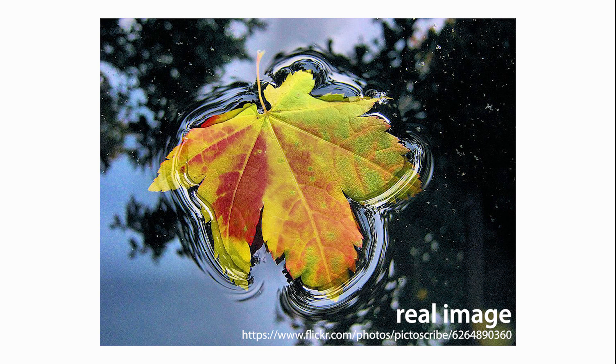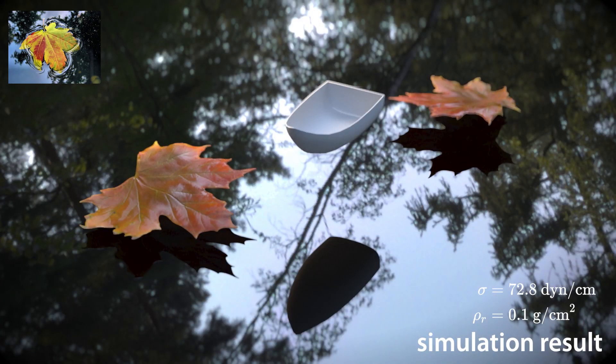The last two examples show the generality of our framework. First, two leaves and a boat, all represented as thin shells, float on water causing dynamic motion.